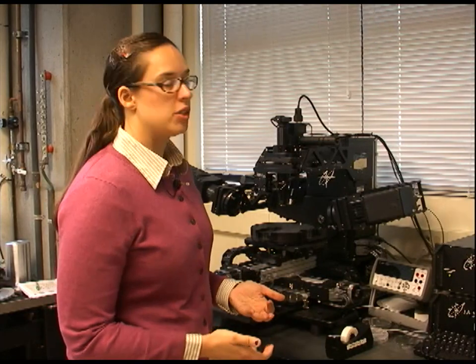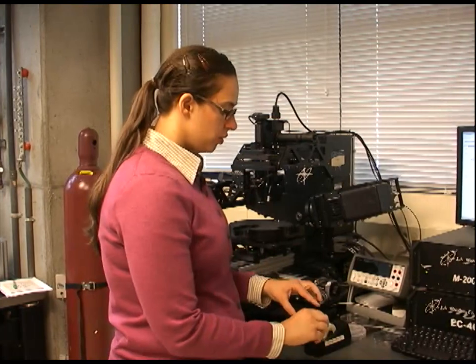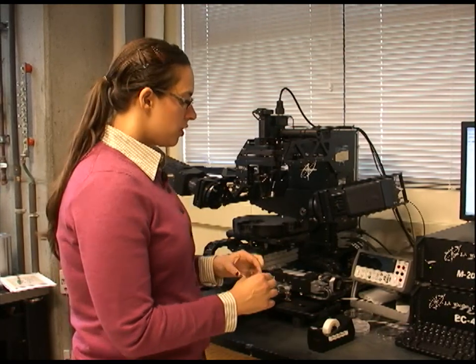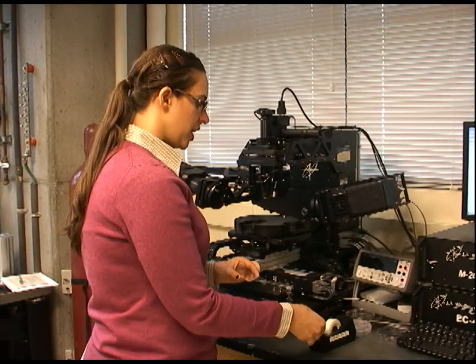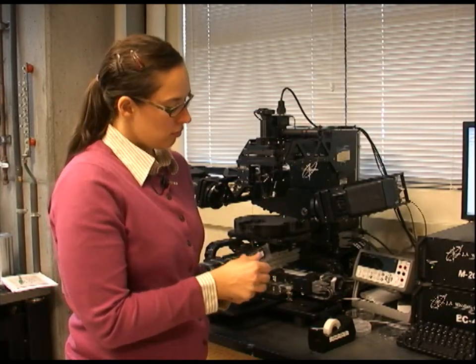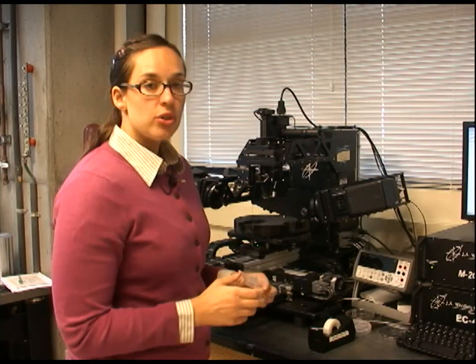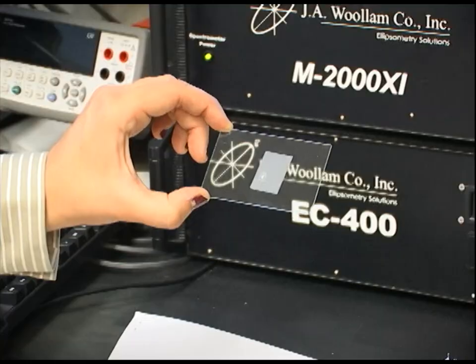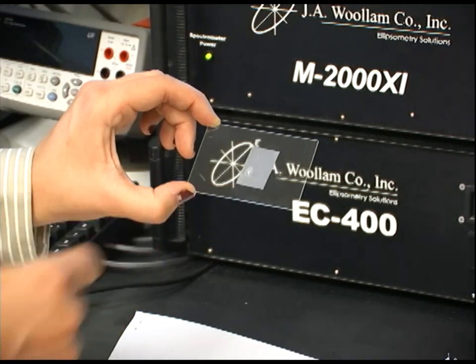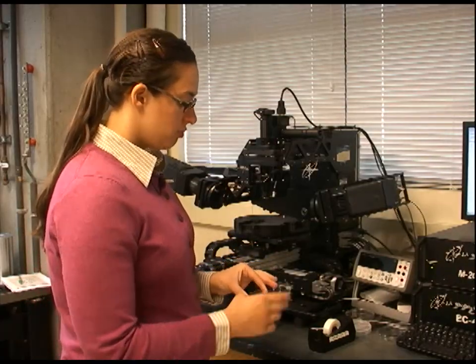Now we're going to go through an example and measure a glass slide. The first thing we need to do to simplify our data analysis later on is apply a piece of scotch tape to the back of our substrate. Because when measuring transparent substrates, there can be backside reflection that we'll have to take into account in our model later on. This can simplify things if we do this right away.